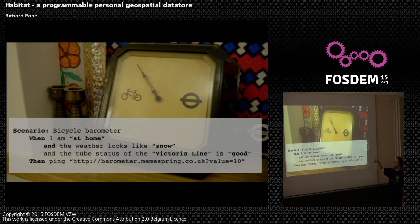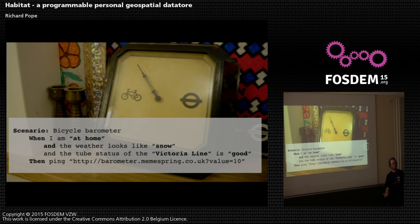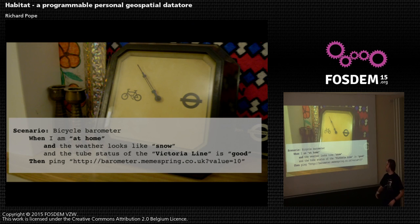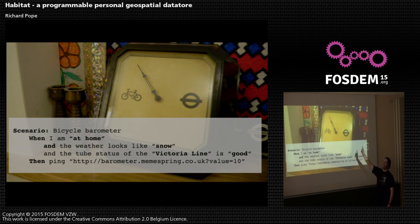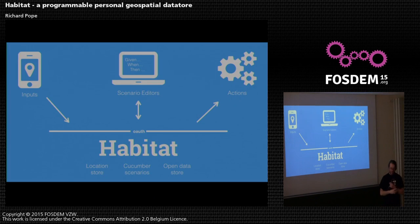The idea is to make it more complicated in future. I built something a couple of years ago to tell me whether to cycle to work or take the Underground based on a bunch of conditions — that currently runs on bespoke code but could run on something like this. So you'd say 'when I'm at home, and the weather forecast shows snow, and the tube is in a certain state, ping this URL and make that dial move.' That's the direction I'm heading.